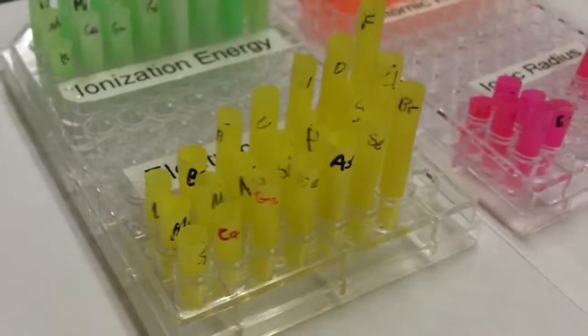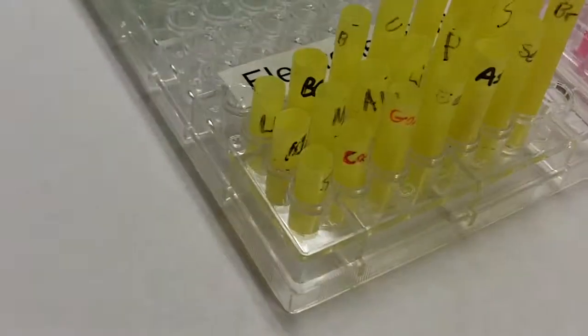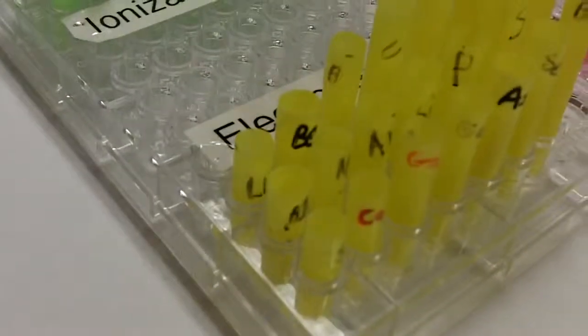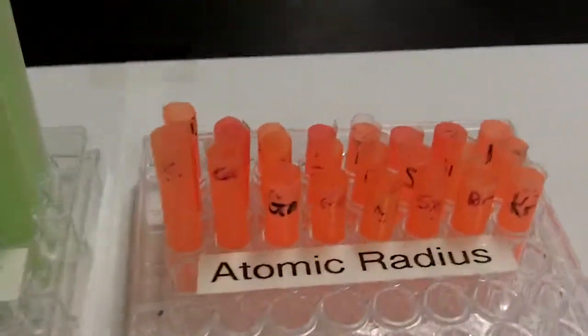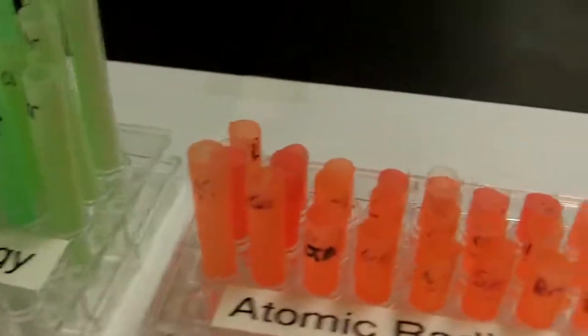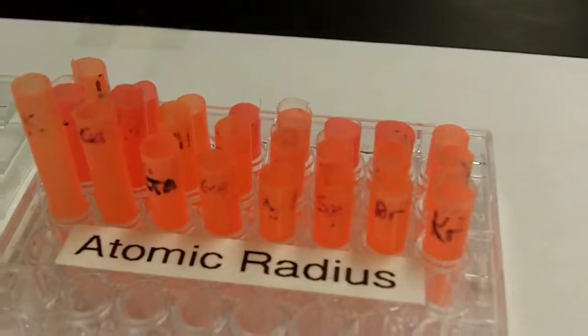Electronegativity, same thing as you move from left to right. You definitely increase in terms of electronegativity. And down a family, you also decrease, and you do not have the noble gases.